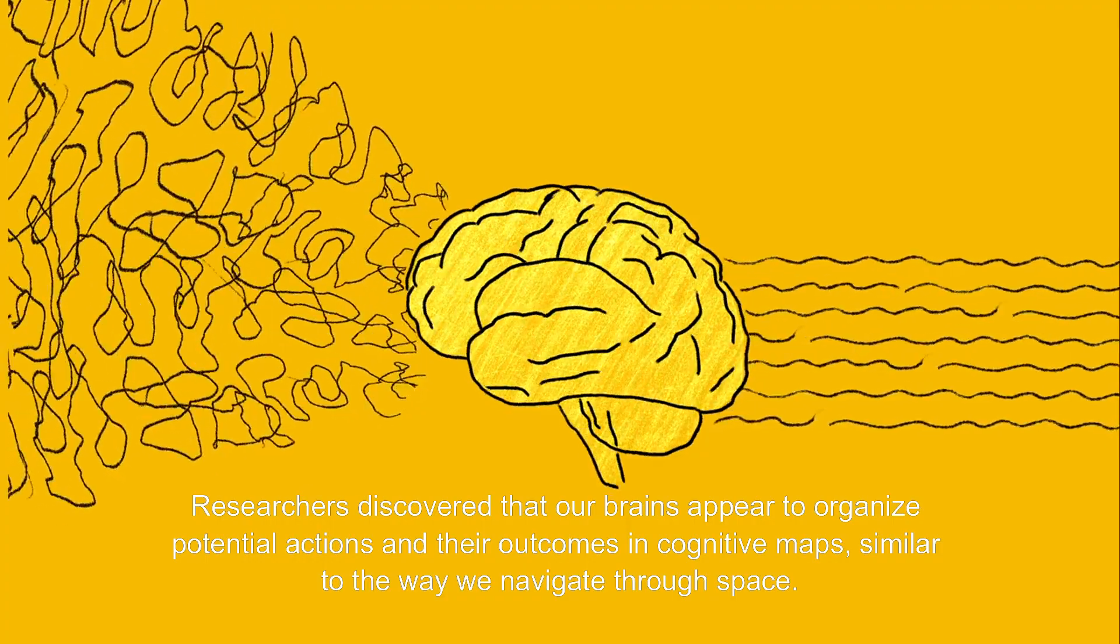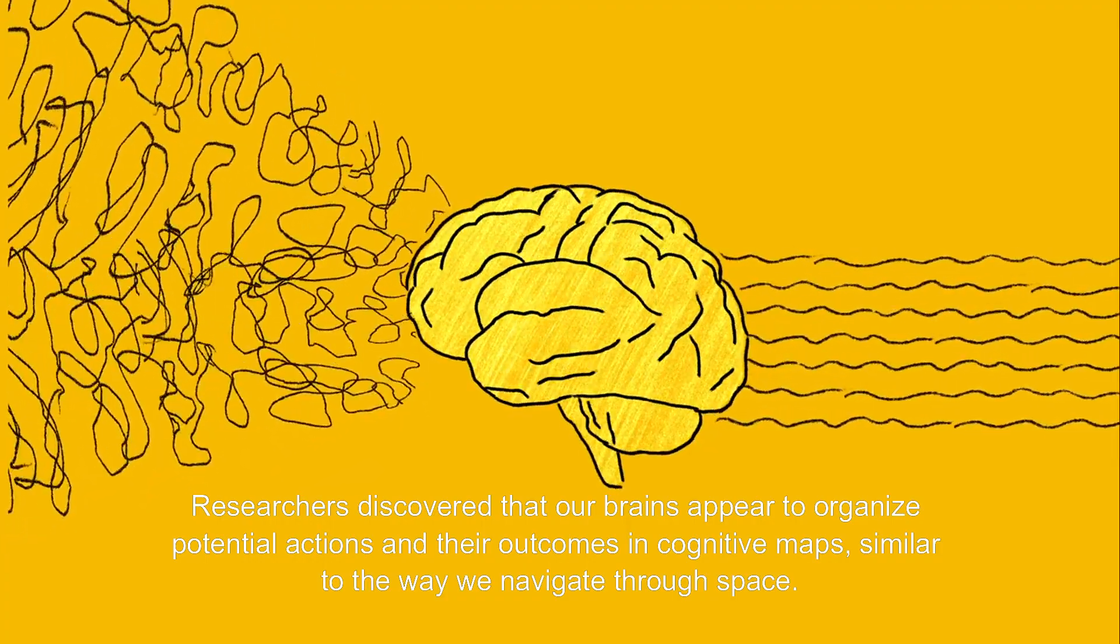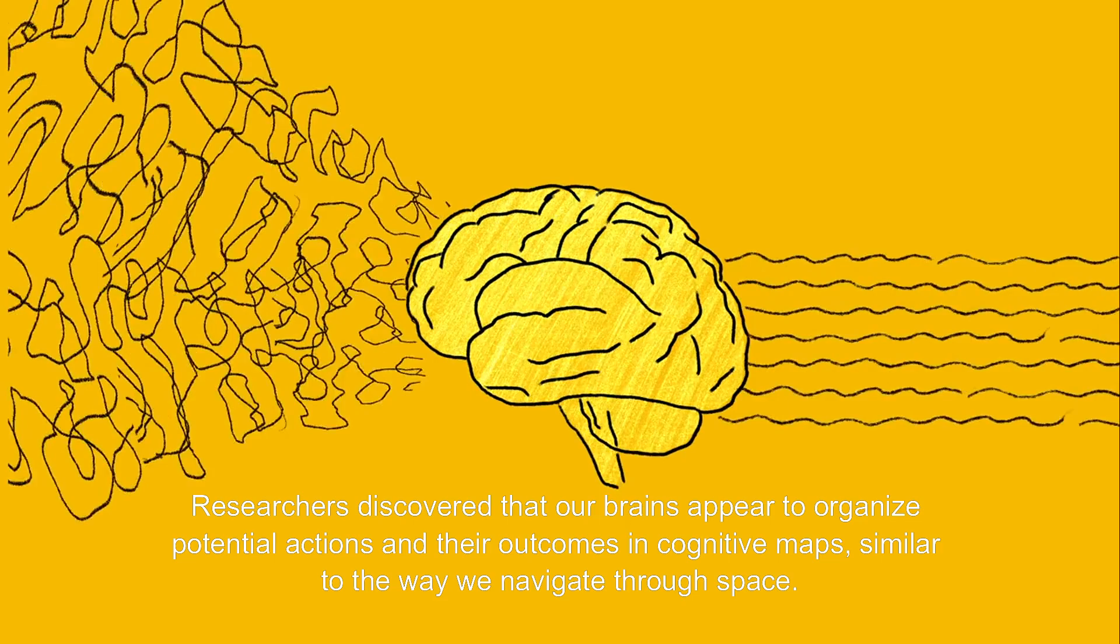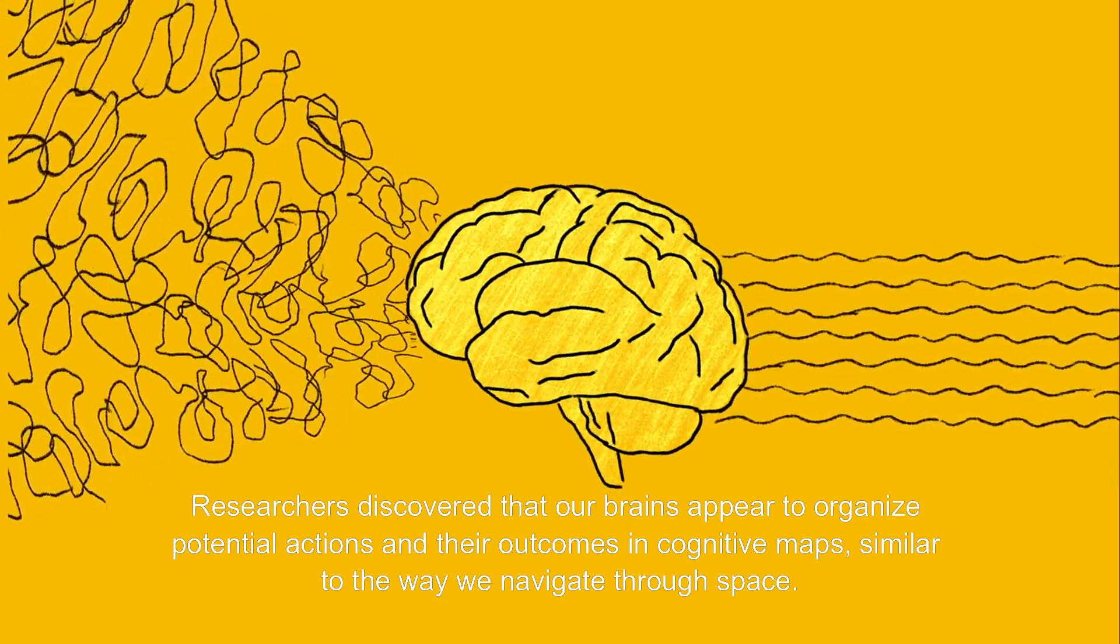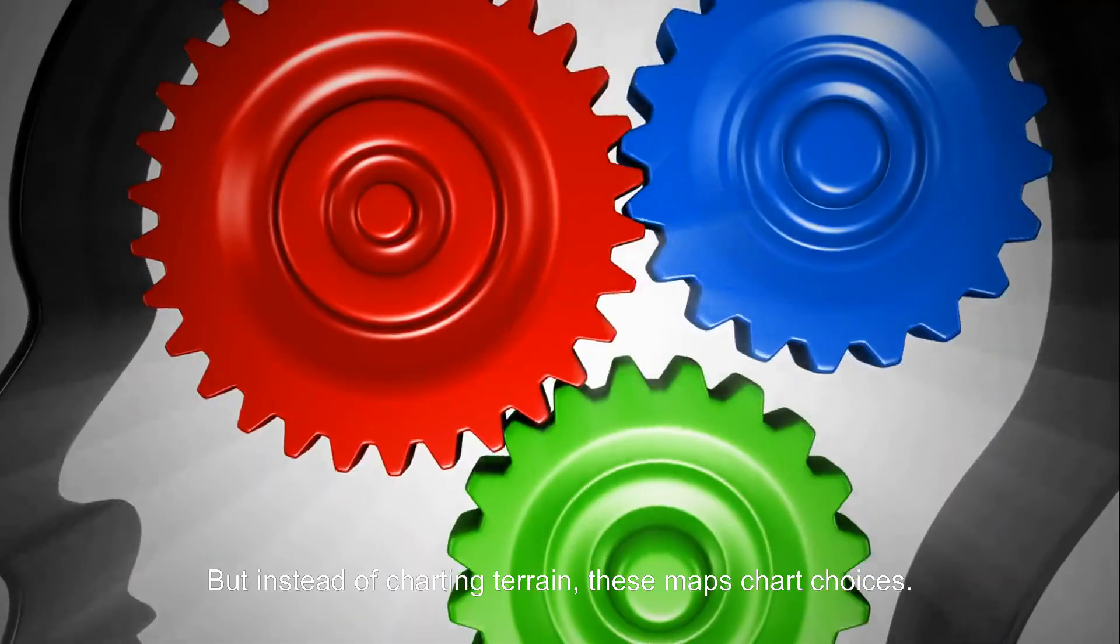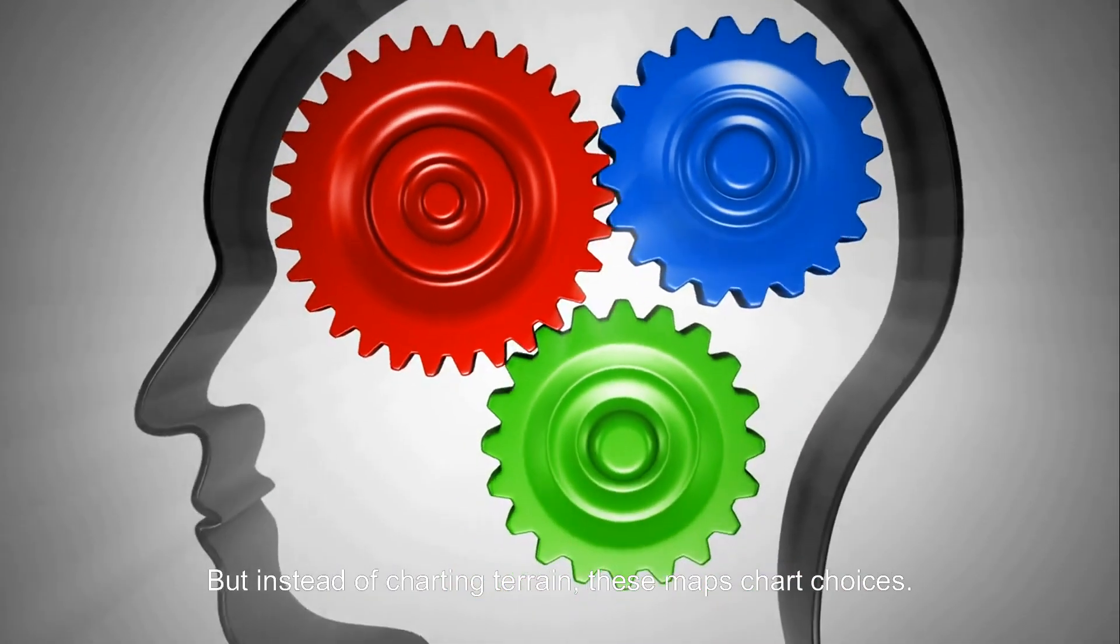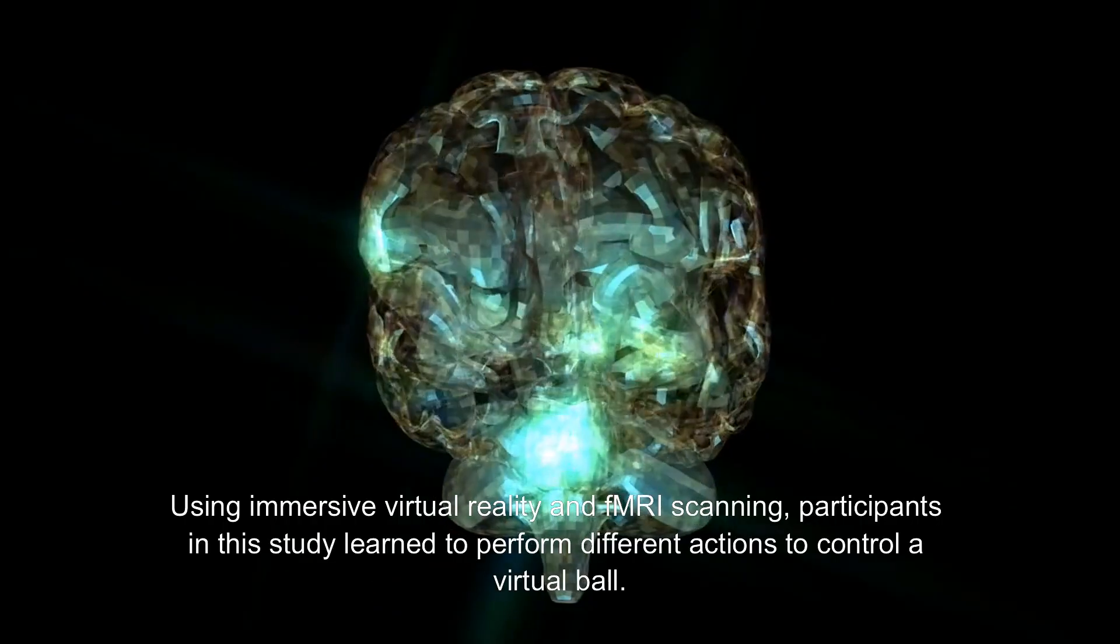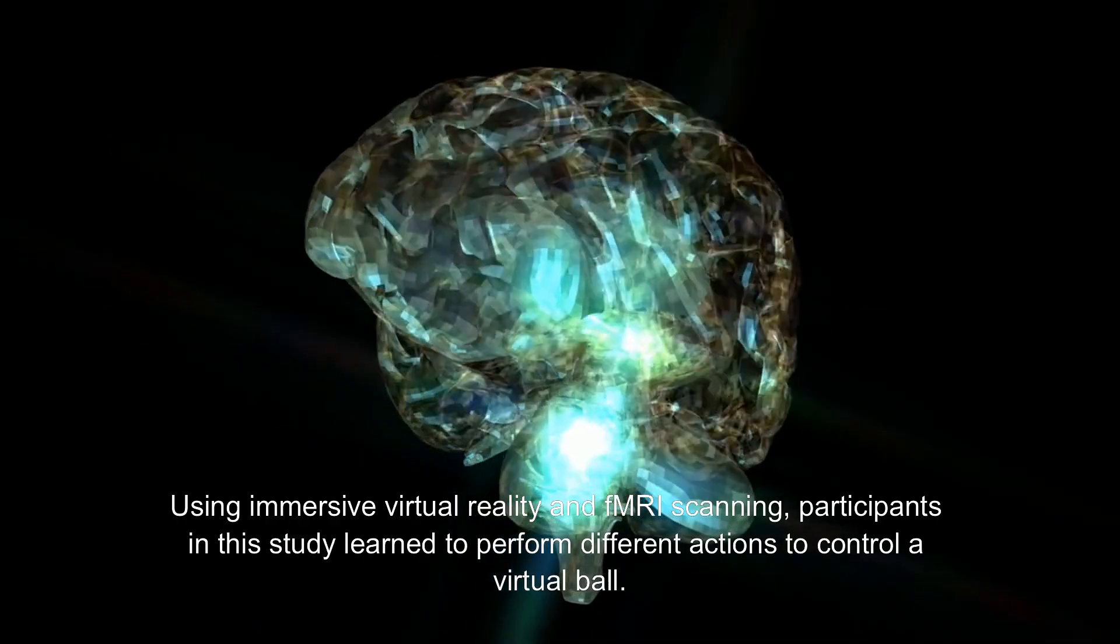A groundbreaking new study may have the answer, and it lies in how your brain maps possibilities. Researchers discovered that our brains appear to organize potential actions and their outcomes in cognitive maps, similar to the way we navigate through space. But instead of charting terrain, these maps chart choices.